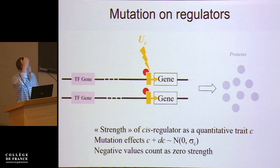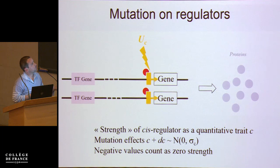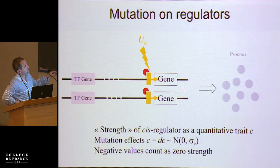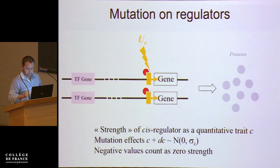Then you've got mutations on the cis regulator. To model this, you consider a quantitative trait C that measures the strength of that cis regulator, and it will mutate with a normal deviate — when you introduce a mutation, it will have an unbiased effect drawn from a normal distribution. You want this regulatory strength to stay positive: in different versions of the model, you either ignore values that are negative or set them to zero.